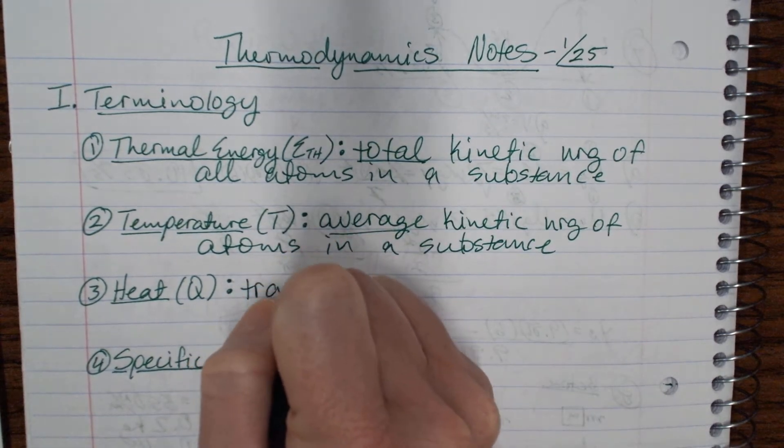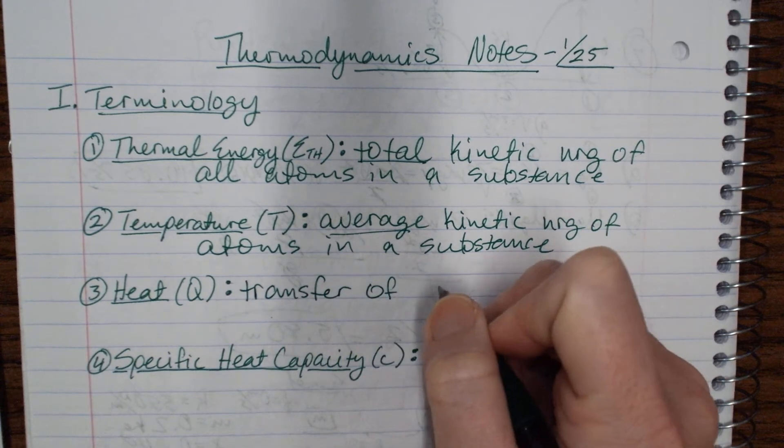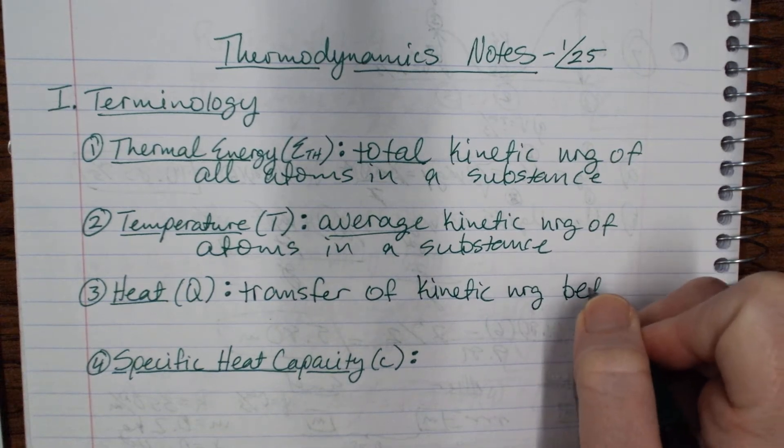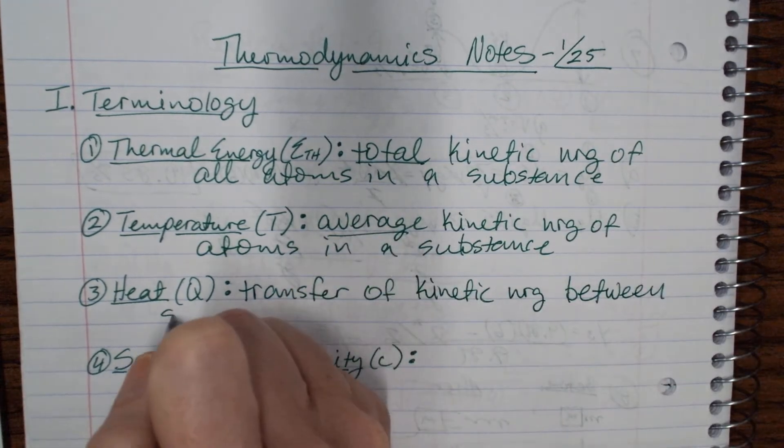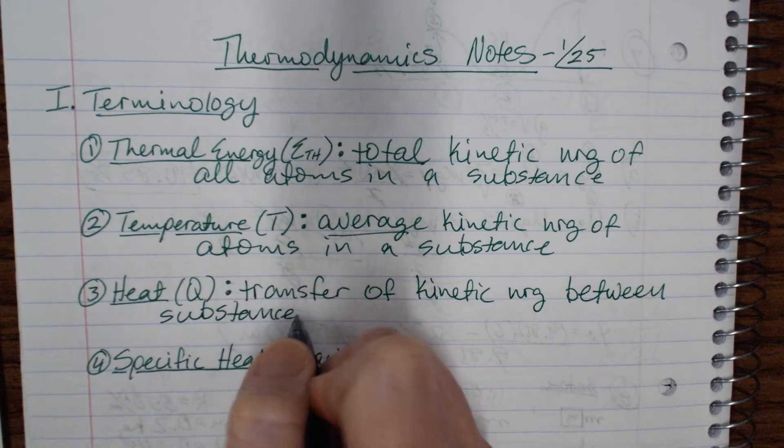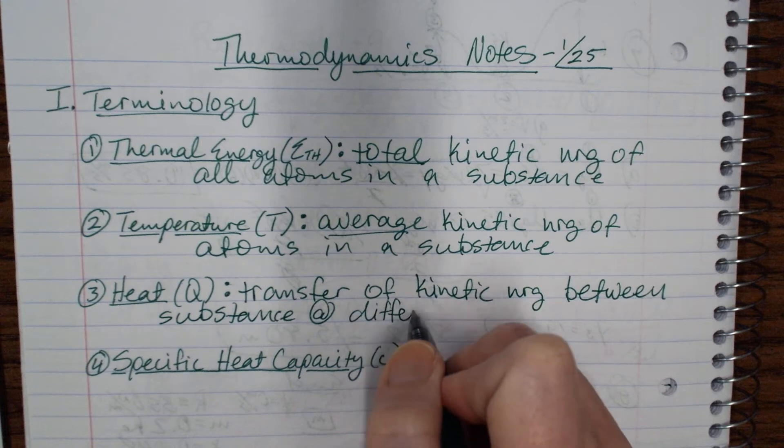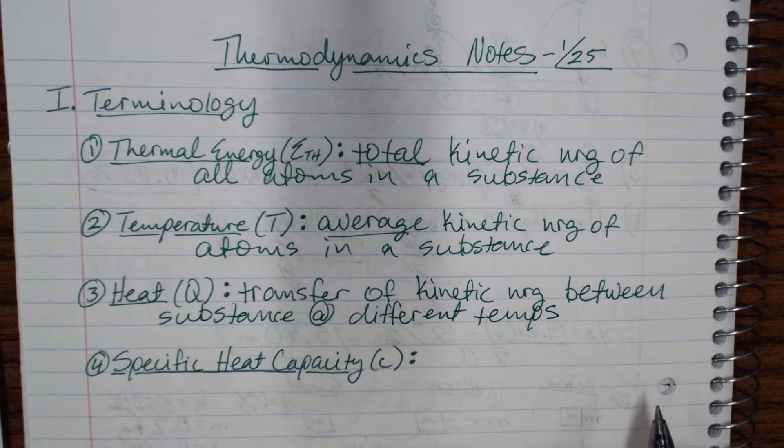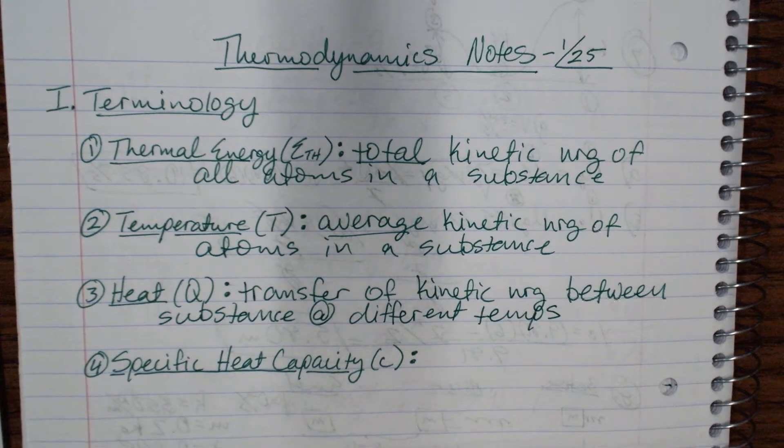Heat is the transfer of kinetic energy between substances at different temperatures. Heat always travels from the hot thing to the cold thing. It can't travel from cold to hot because technically there's no such thing as cold. Cold is just a feeling, but it'll travel from the thing with more thermal energy to the thing with less thermal energy. The thing with higher temperature will flow heat into the lower temperature thing.